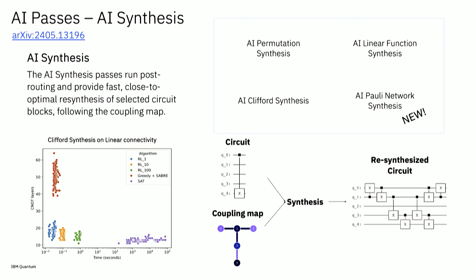I'm going to talk about this more in a few minutes, but this time we're bringing a new pass which is able to synthesize Pauli networks. This is pretty useful in particular in circuits like for chemistry, where you have a lot of rotations and stuff like that. We will have a more in-detail example in the next talk.